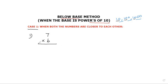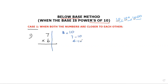The first problem: 7 multiplied by 6. The first step is to find the base. Since 7 and 6 are both single-digit numbers close to each other, the base will be 10. Next we find the difference using the formula: number minus base. So 7 minus 10 gives minus 3, and 6 minus 10 gives minus 4.